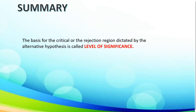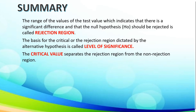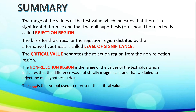For the summary: the basis for the critical or rejection region dictated by the alternative hypothesis is called the level of significance. The range of values of the test statistic that indicates a significant difference and that the null hypothesis should be rejected is called the rejection region. The critical value separates the rejection region and the non-rejection region. The Z-tab is the symbol used to represent the critical value. The non-rejection region is the range of values indicating the difference was statistically insignificant and that you failed to reject the null hypothesis.